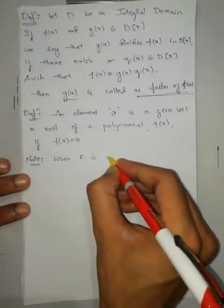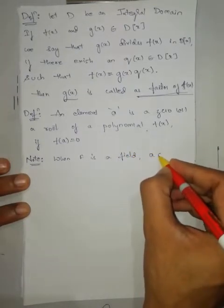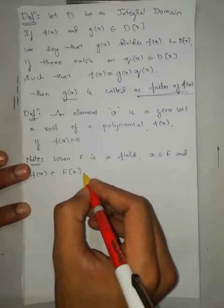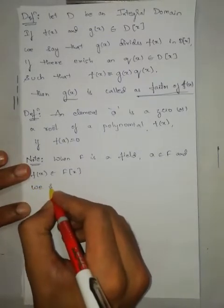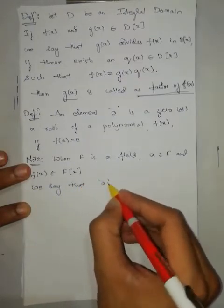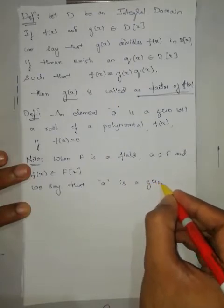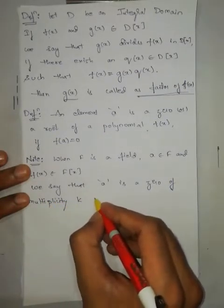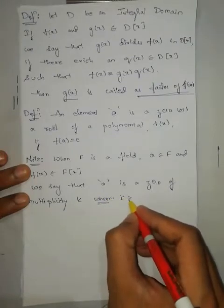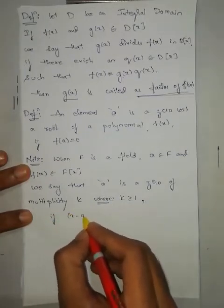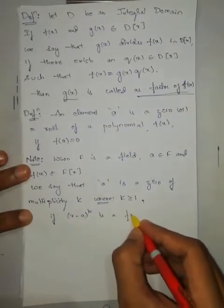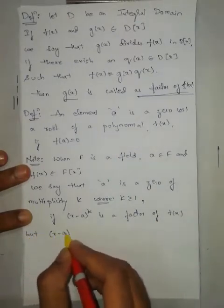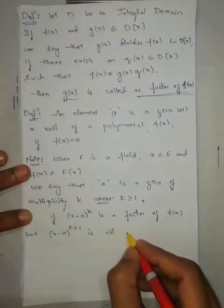Note: when F is a field, a belongs to F, and f(x) is any polynomial in polynomial ring F[x], we say that a is a zero of multiplicity k (where k is greater than or equal to one) if (x − a)^k is a factor of f(x) but (x − a)^(k+1) is not a factor of f(x).